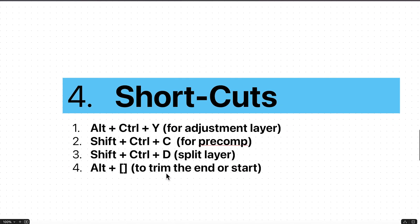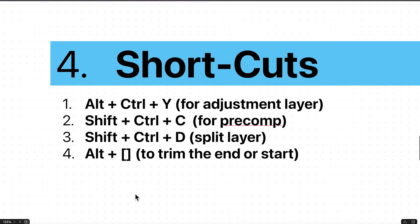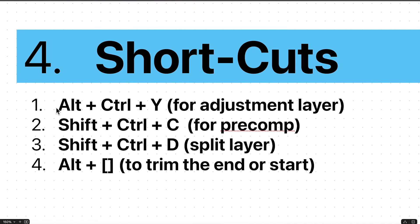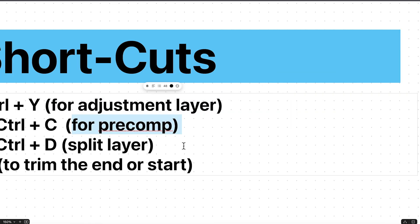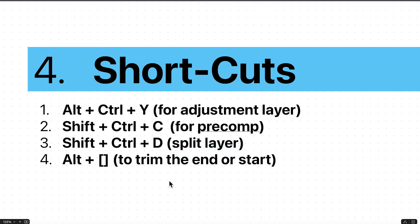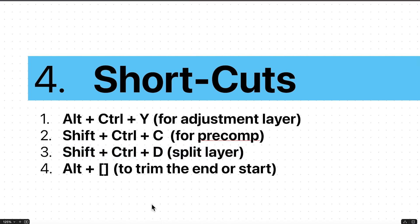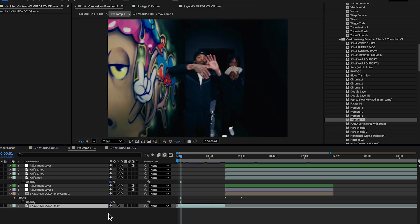The fourth point is shortcuts. This is another underrated one — a lot of pro editors still don't use shortcuts, which really surprises me. They save a lot of time and help with your overall workflow. On the chart you can see the crucial shortcuts you need to learn: for adjustment layer, pre-comp, trimming clips, and more. I'll also link more shortcuts in the description so you can go through them.